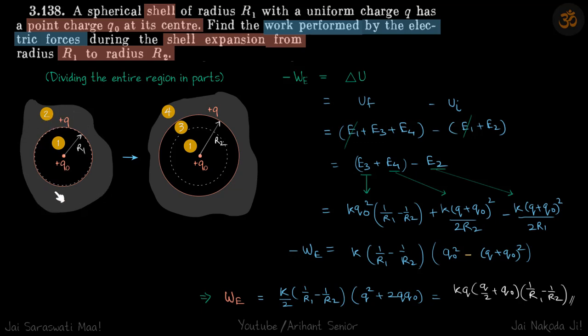This is the initial configuration and finally the size of the shell is increased. So now we have three parts: one is the initial part that is the R1 radius part, then there is the in-between part, and then there is again the external region.